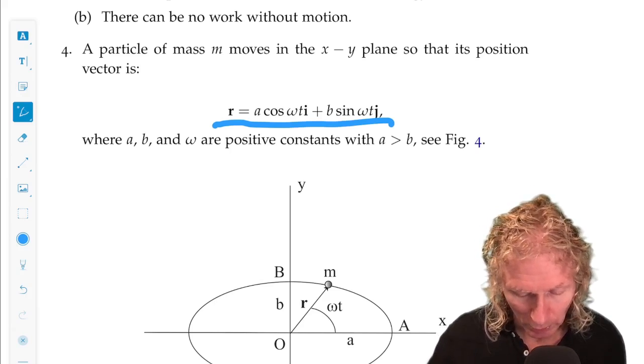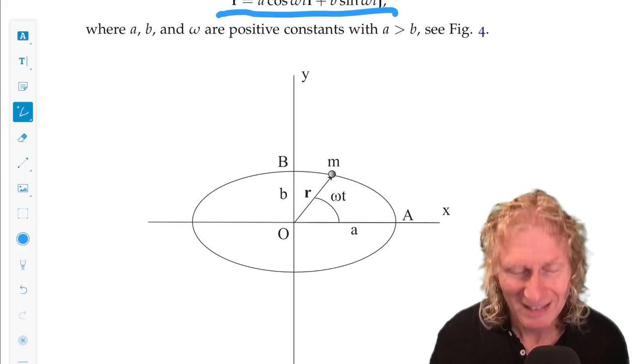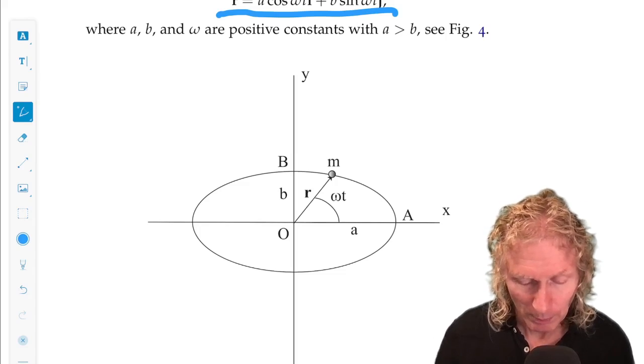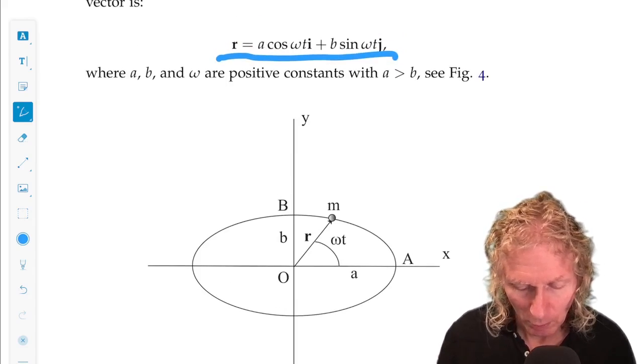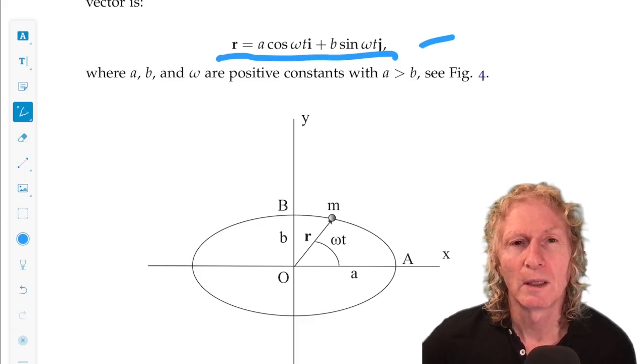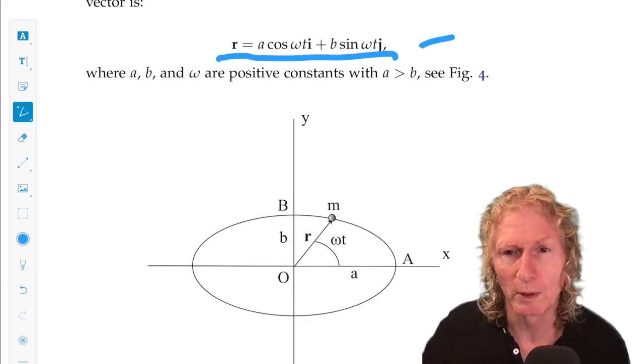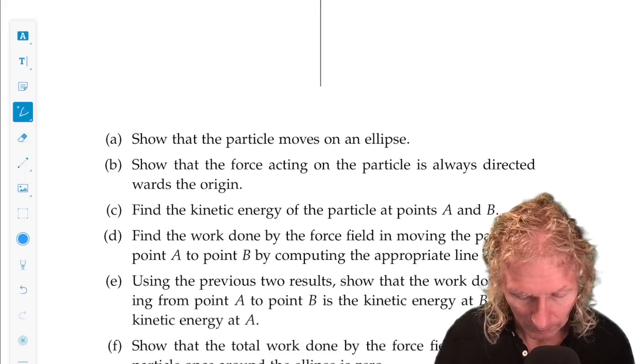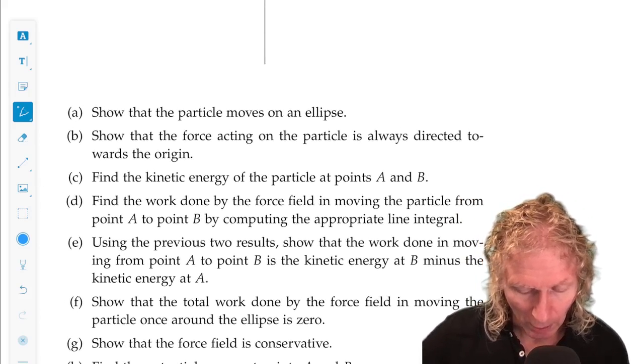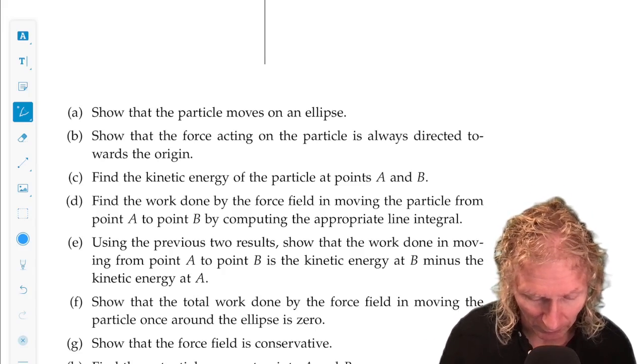I want you to show that the particle moves on an ellipse, and that's just getting you to understand that this parametric equation for ellipse is the same as the formula x squared over a squared plus y squared over b squared equals one. Show that the force acting on the particle is always directed towards the origin. You've had a couple of examples of this already.